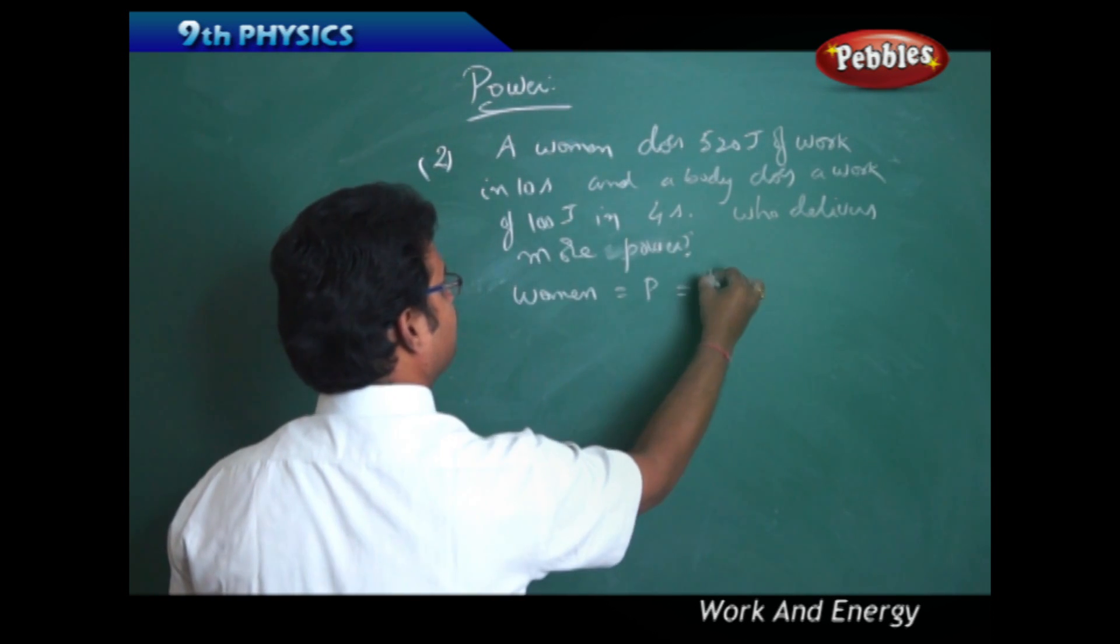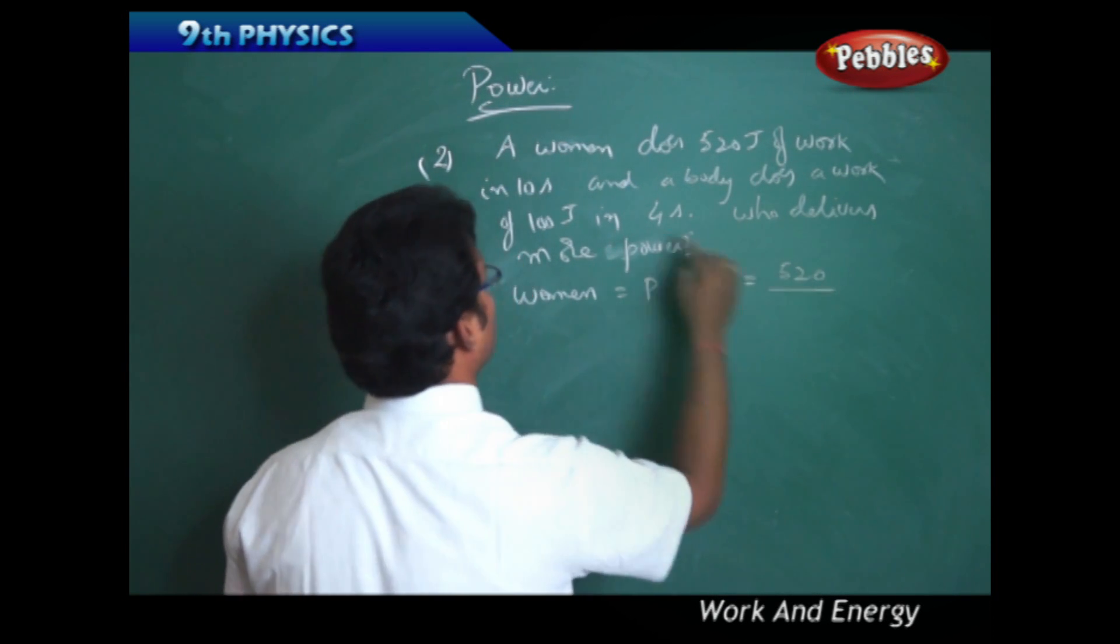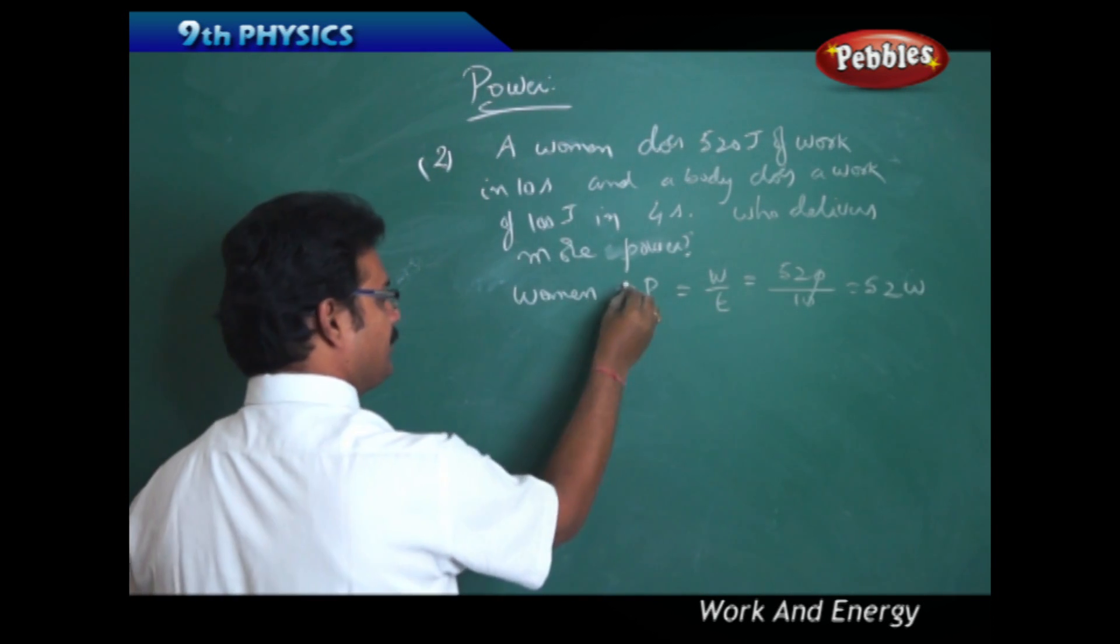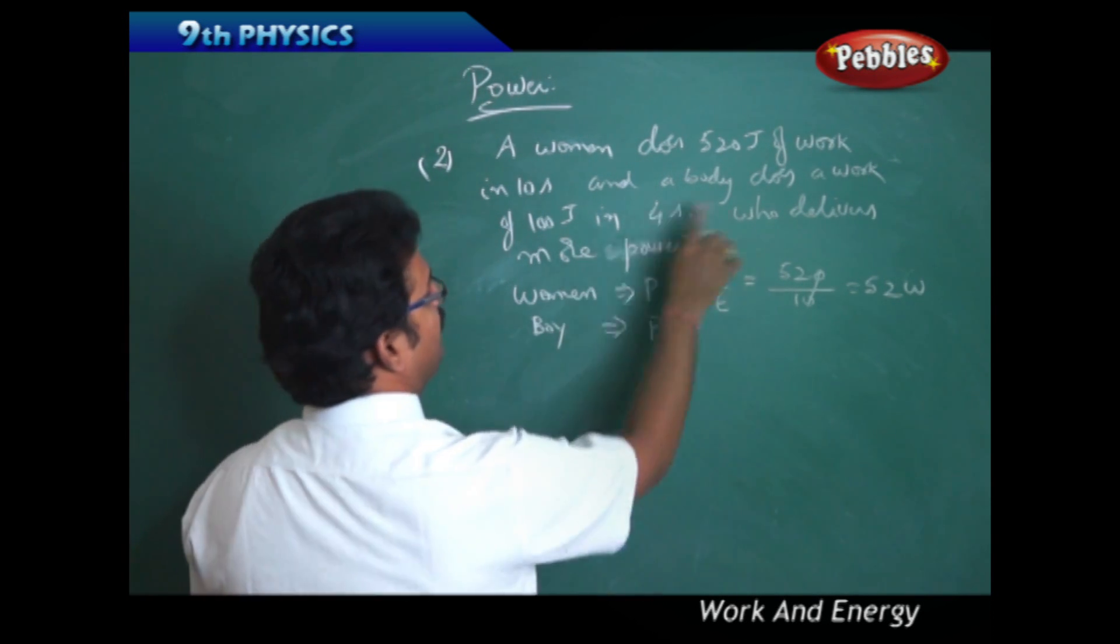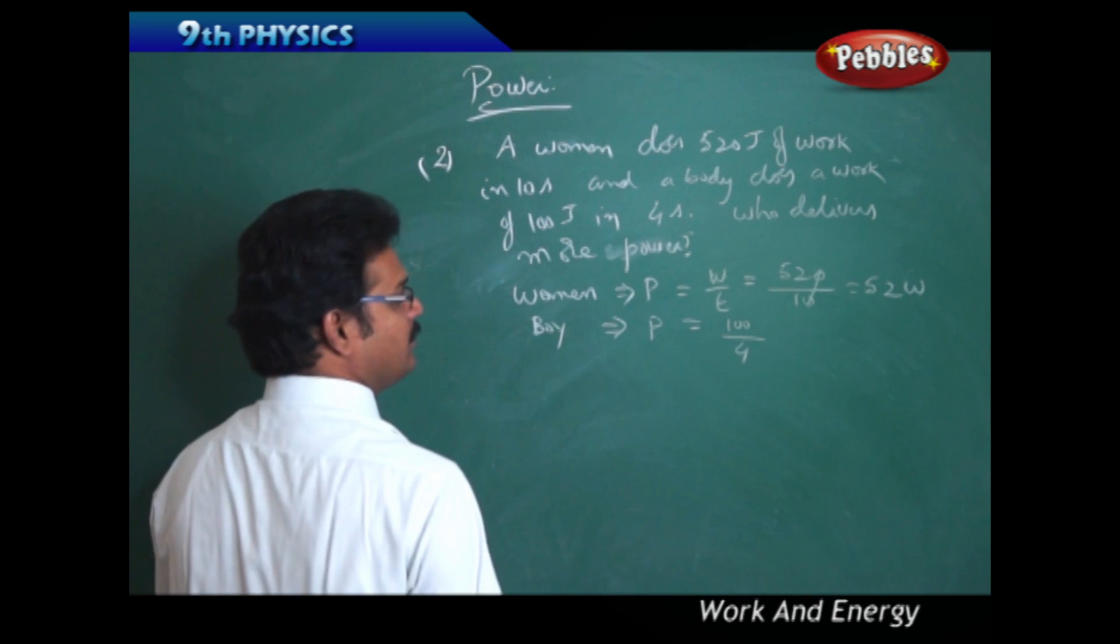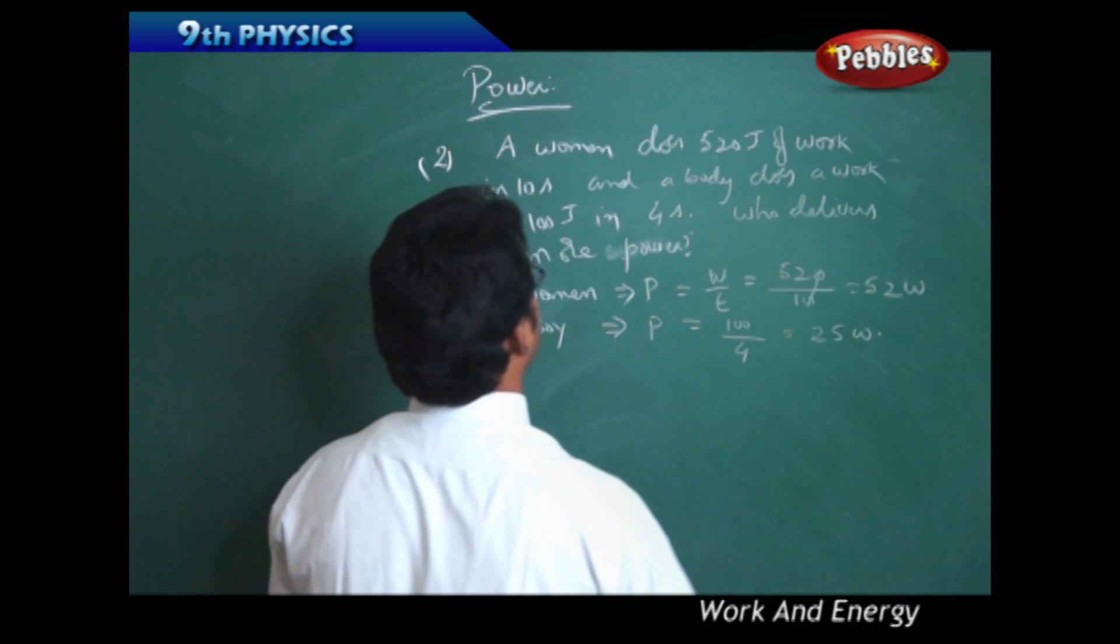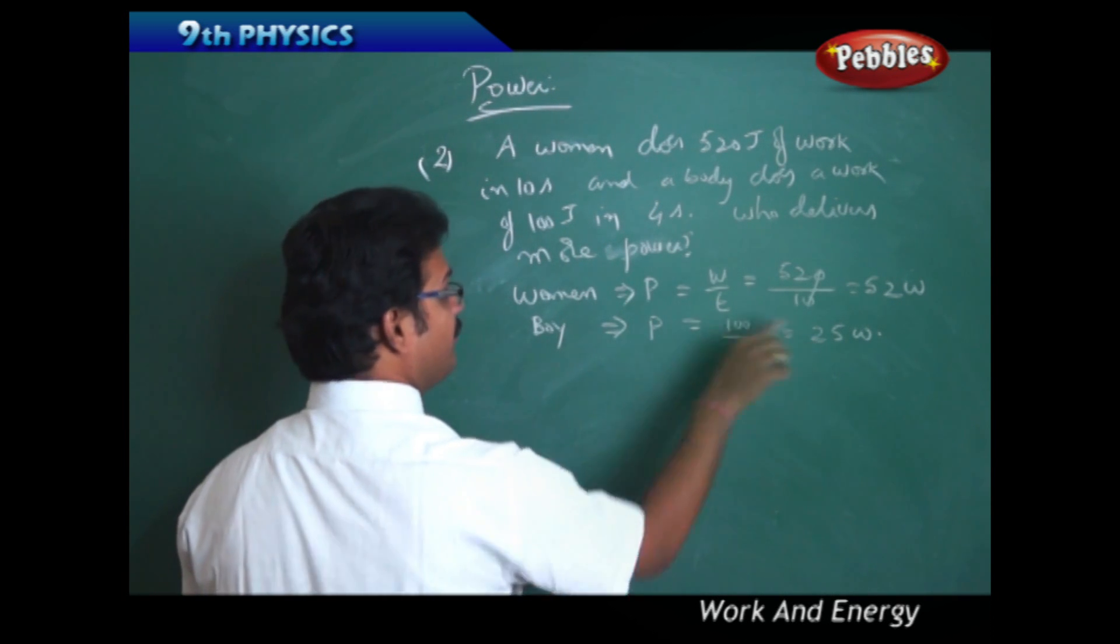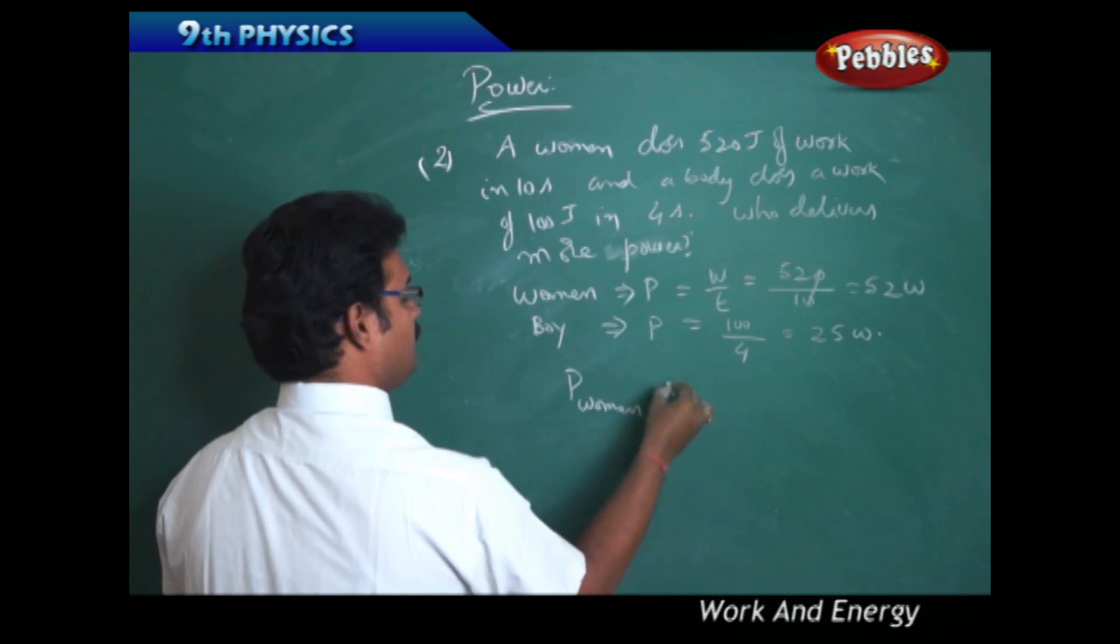Now the boy's case: power P = 100 joules / 4 seconds = 25 watts. The boy has delivered 25 watts, while the woman delivered 52 watts. Therefore, the woman's power is greater than the boy's power.